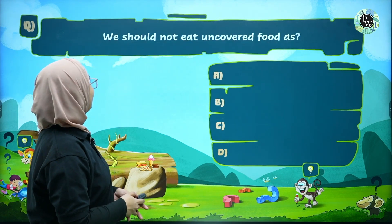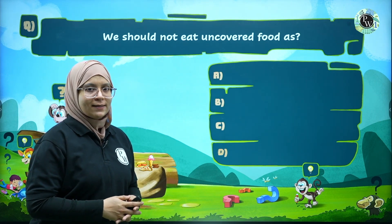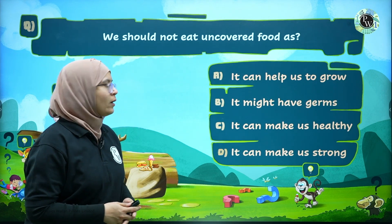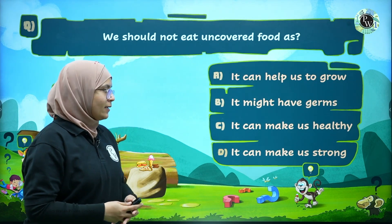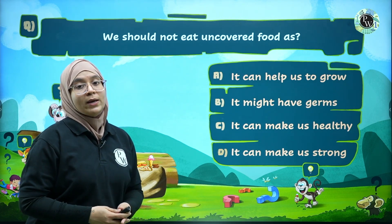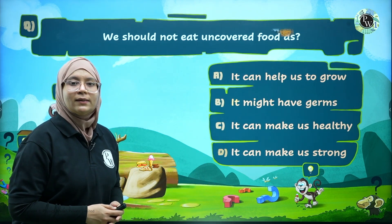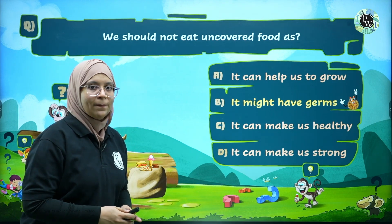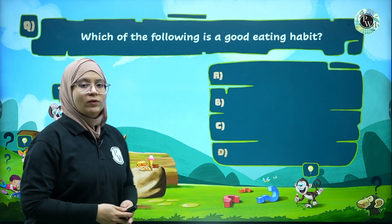Question 2: We should not eat uncovered food because — Option A: it can help us grow, Option B: it might have germs, Option C: it can make us healthy, Option D: it can make us strong. The correct answer is Option B — it might have germs.